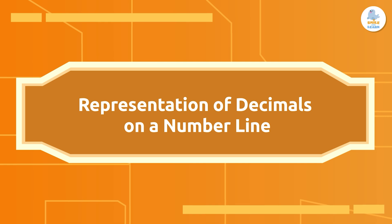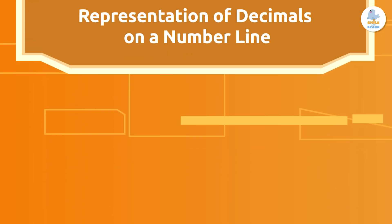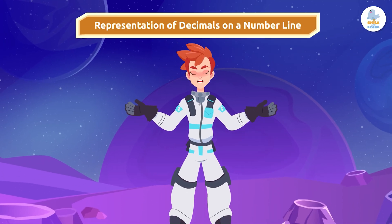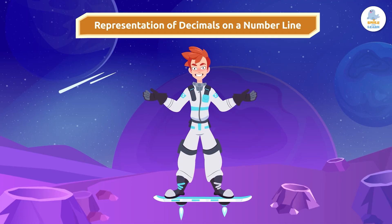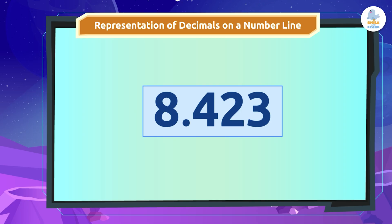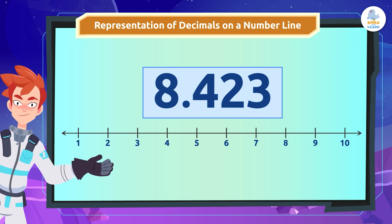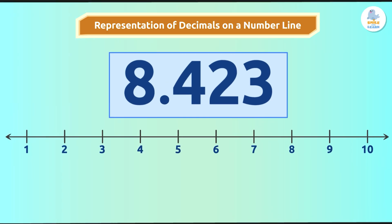Now let's look at the representation of decimals on a number line. Now that you know the relationship between fractions and decimals, let's see how we place them on a number line. Where would you put this number — eight and four hundred twenty-three thousandths? First we find the whole number, then we find the decimals, starting with the tenths, then the hundredths, and finally the thousandths.